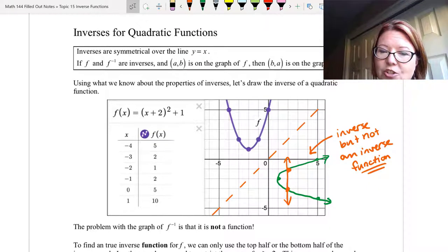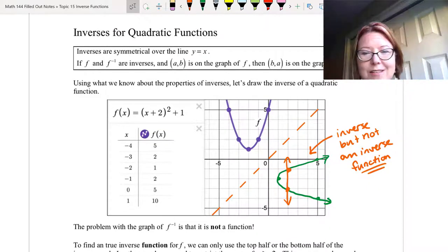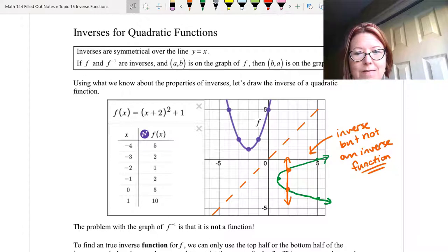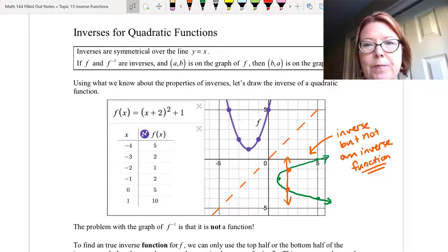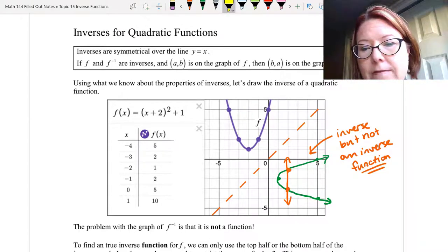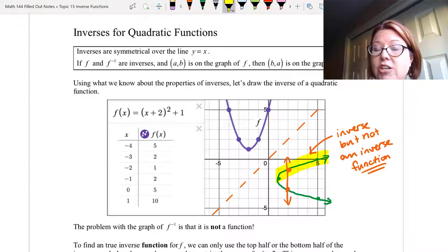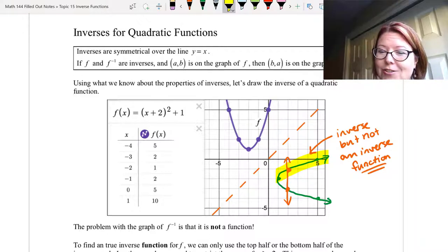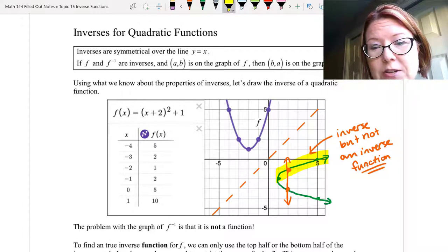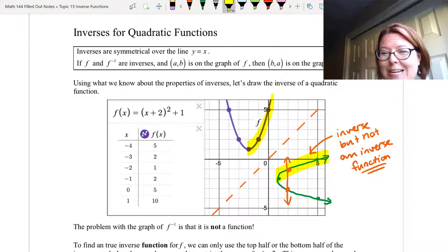So to find a true inverse function for f, we can only use either the top or the bottom of this inverse that we've drawn. If we use the top half of the inverse, then we're essentially using the range y ≥ -2. This means we also need to restrict the domain of the original quadratic function f(x) to x ≥ -2. This means we have half of a quadratic function and a square root function as the result.